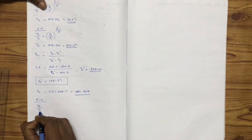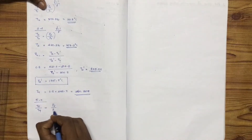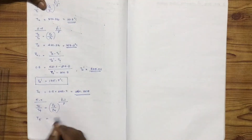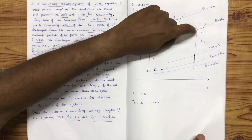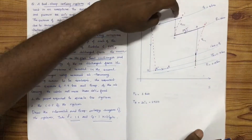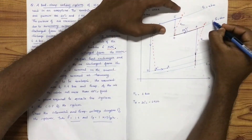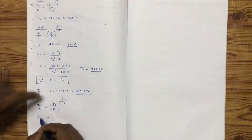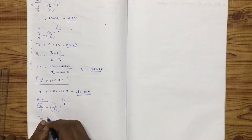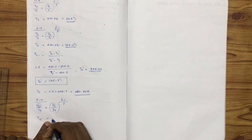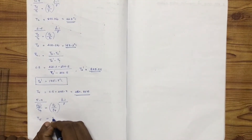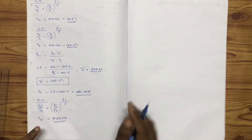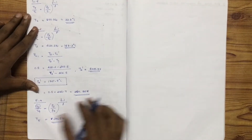For the auxiliary compressor isentropic process 4 to 5: T5 divided by T4 is equal to P5 divided by P4, raised to gamma minus 1 by gamma. P3 equals P4. The isentropic value of T5 is equal to 391.5 Kelvin.